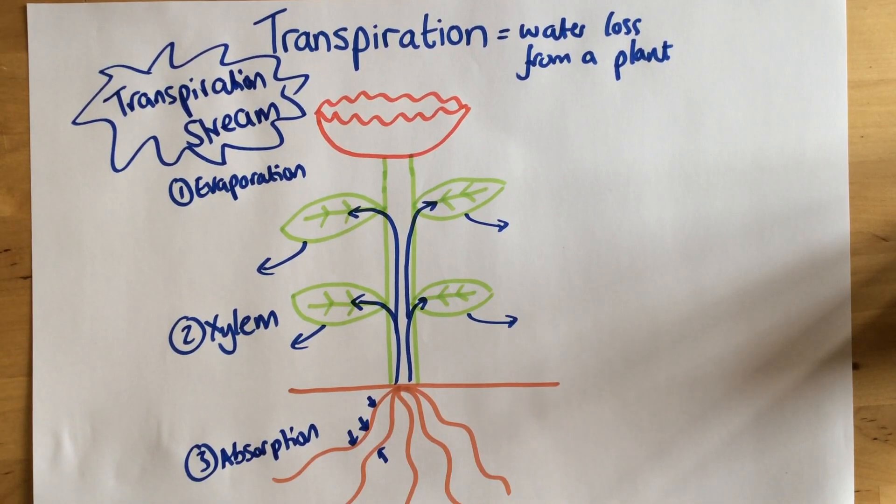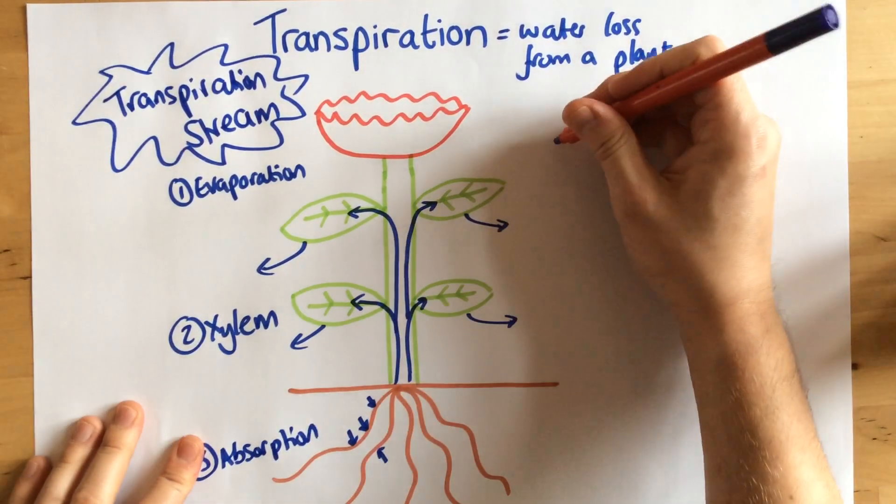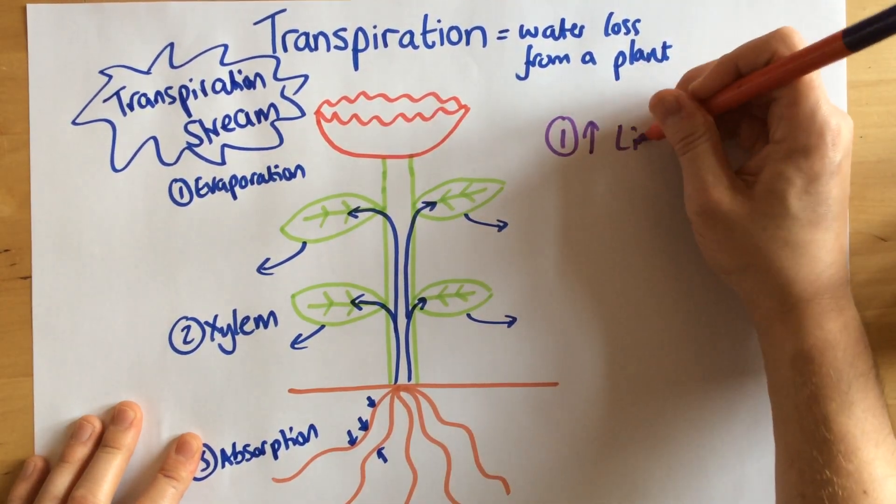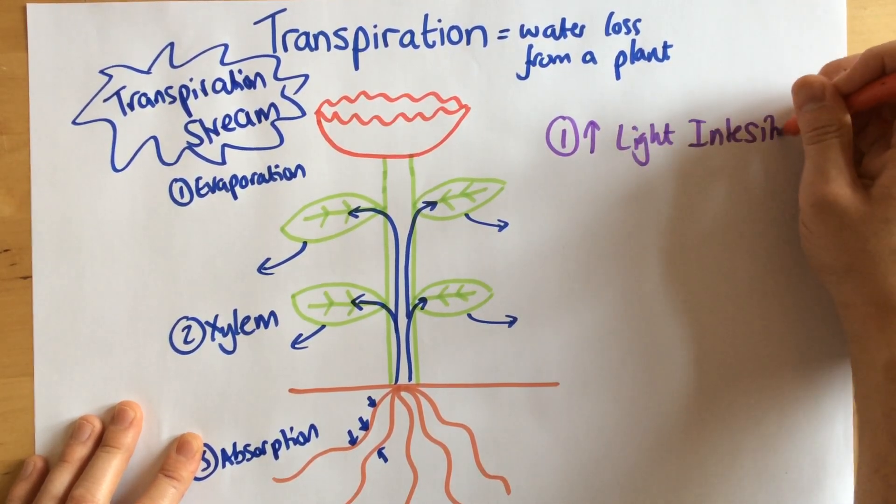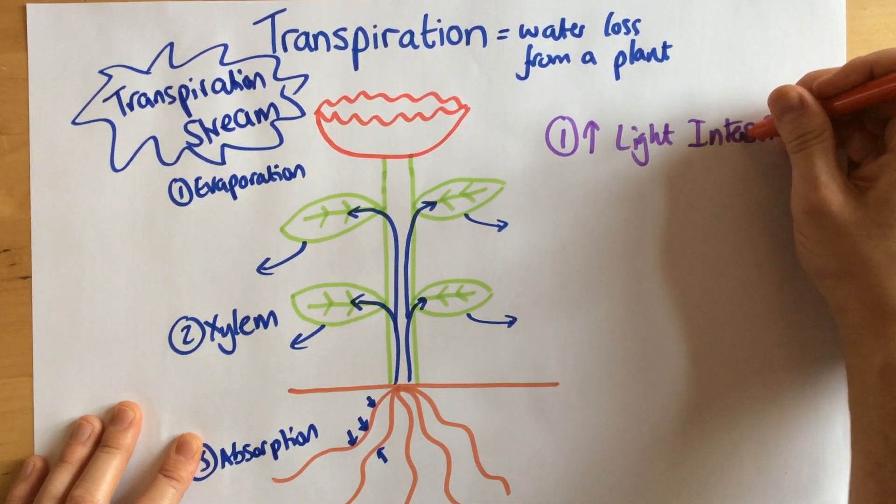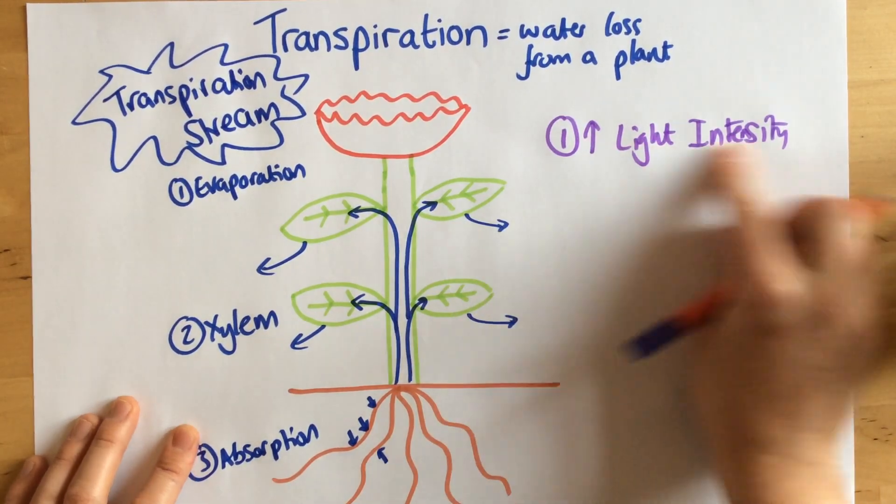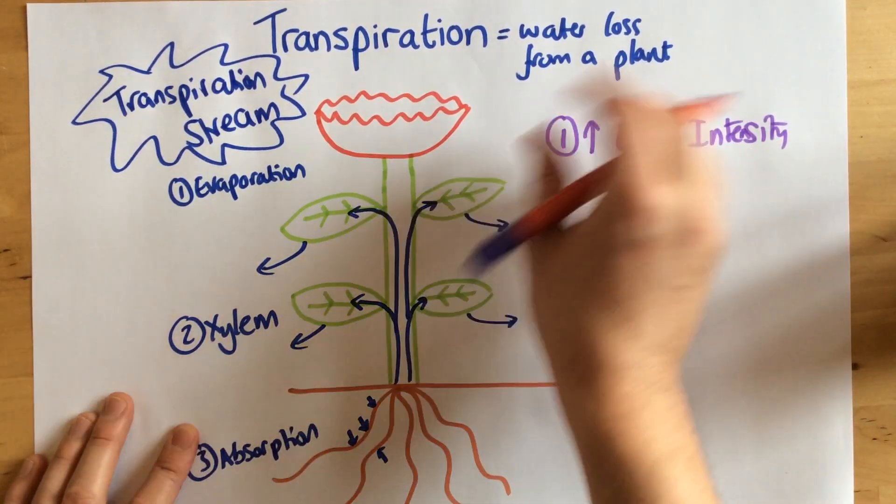Now there are different factors which can affect the rate of transpiration. First of all, if we have a high light intensity, we're going to have more transpiration.